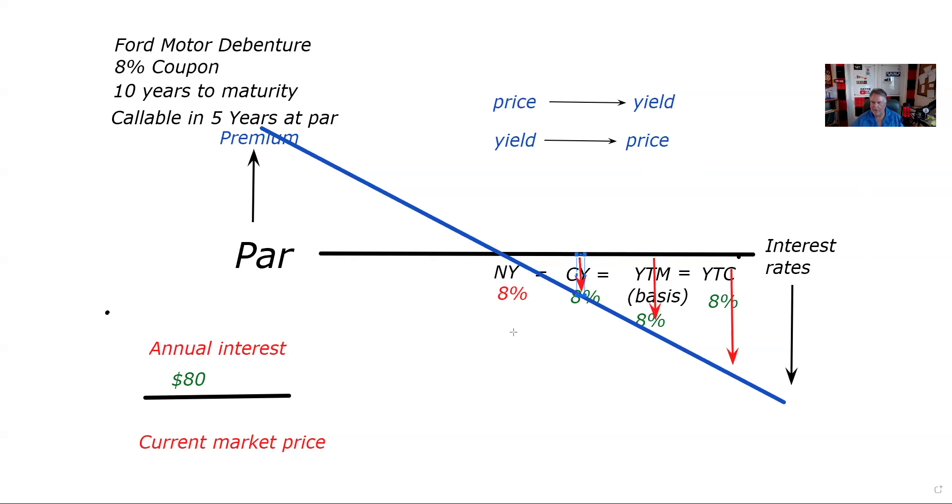Now, the only yield you have to be able to calculate here is current yield. Now, people don't buy bonds based on the current yield. They buy the bond based on what they'll make by holding it to maturity or holding it to the call. And so now let's say that this Ford Motor Company debenture is $1,200. And again, what I'm going to do is give you the price and the yield. And again, it's this relationship. It's not can you do the math. The only math we have to do is the current yield. Now, this is also helpful because it's the relationship of the yields that's testable. So if I take $80 and I divide by $1,200, if you bought this Ford Motor Company debenture in the secondary market, the current yield would be 6.7%.